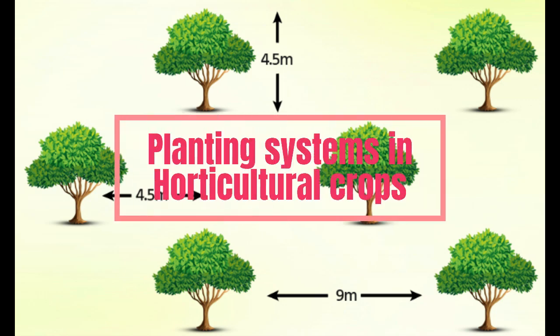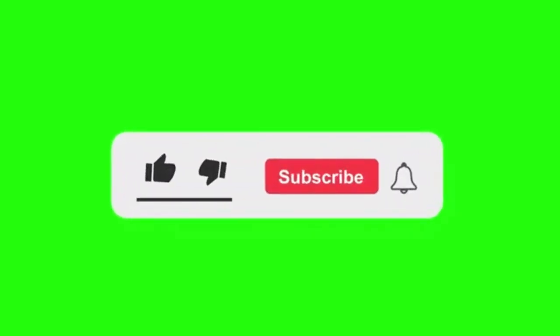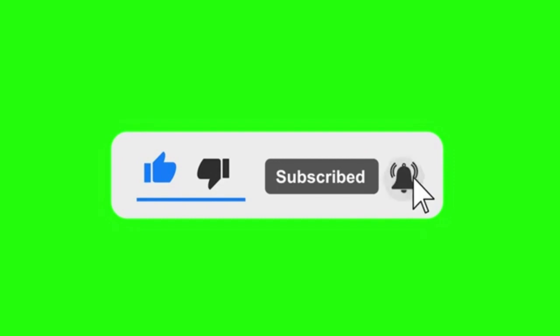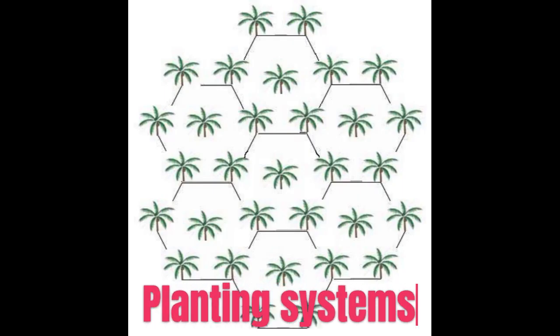This video helps to learn planting systems in horticultural crops. A planting system is a system or pattern of arrangement of crops for planting in an orchard or plantation. It provides maximum plant population per unit area, suitable space for proper growth and development of crops, and facilitates orchard management.